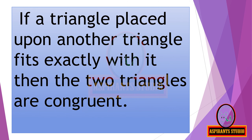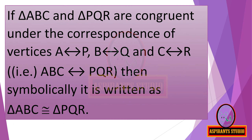If a triangle placed upon another triangle fits exactly with it, then the two triangles are congruent. If triangle ABC and triangle PQR are congruent, under the correspondence of vertices, A corresponds to P, B corresponds to Q, and C corresponds to R — that is, ABC corresponds to PQR — then symbolically it is written as triangle ABC is congruent to triangle PQR.